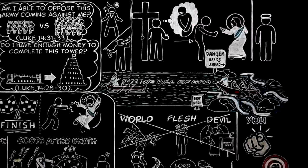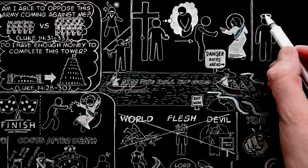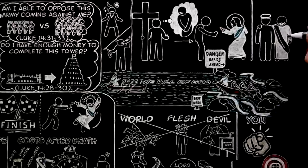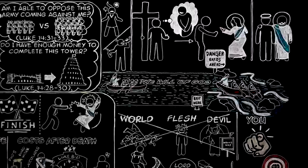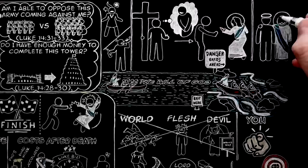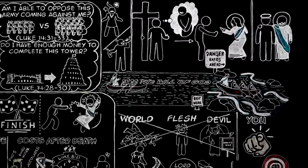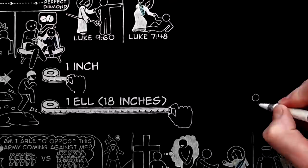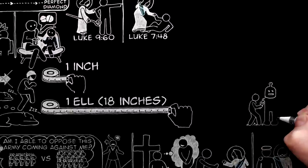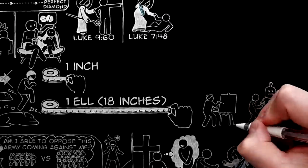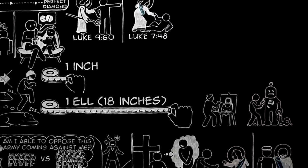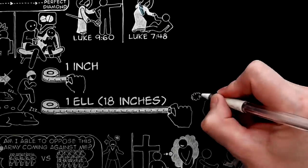Of course we never wanted and never asked to be made into the sort of creatures he is going to make us into. But the question is not what we intended ourselves to be, but what he intended us to be when he made us. He is the inventor. We are only the machine. He is the painter. We are only the picture. How should we know what he means us to be like?